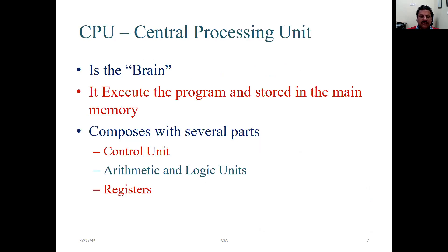In general term, many call CPU as brain or central processing unit. What basically it does? It executes the program stored in the main memory. It has several parts like control unit, arithmetic logic unit, and registers.